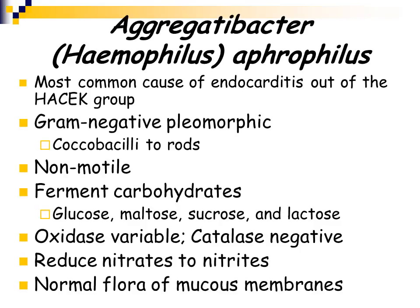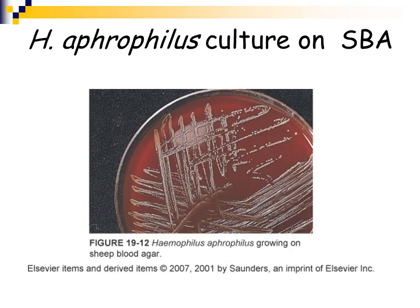Aggregatibacter aphrophilus — formerly Haemophilus aphrophilus — is the most common cause of endocarditis out of the HACEK group organisms. It is a pleomorphic, tiny rod or coccobacillus. It is non-motile and ferments carbohydrates, specifically glucose, maltose, sucrose, and lactose. It is oxidase variable, catalase negative, and reduces nitrates to nitrites. It is normal flora of the human mucous membranes. Here is Aggregatibacter aphrophilus growing on a sheep blood agar plate.